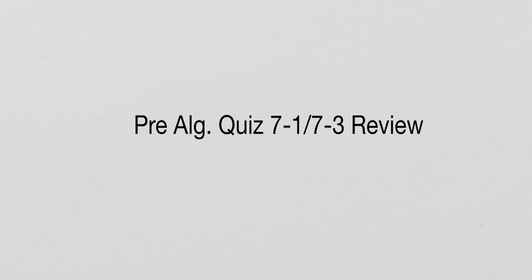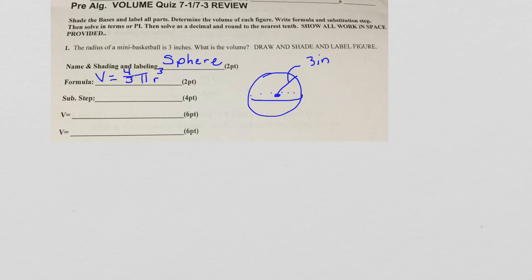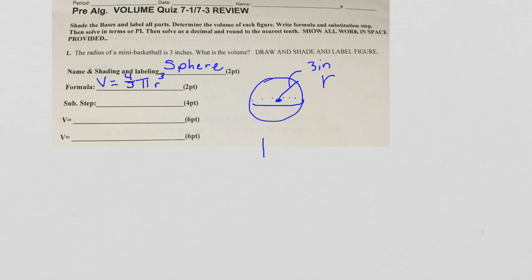Let's do the quiz 7-1 to 7-3 review. The first problem: we are given a mini basketball with a 3-inch radius. We went ahead and drew the basketball. Notice that the radius starts at the center and goes out to one side of the sphere, so that makes it our radius. We're going to call it a sphere, put our formula in — V equals 4 divided by 3 times pi times the radius cubed — and do our substitution step: V equals 4 thirds pi times 3 cubed.